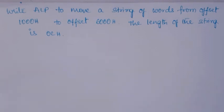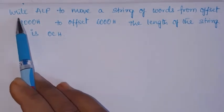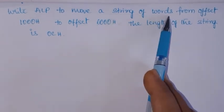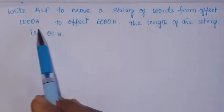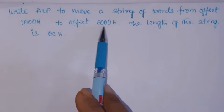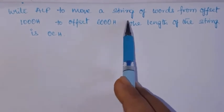Let's see a program for a block transfer of data - it means a block of data is transferred from one location in memory to another location. This can be asked in exams: write an assembly language program to move a string of words from offset address 1000H to offset address 6000H.